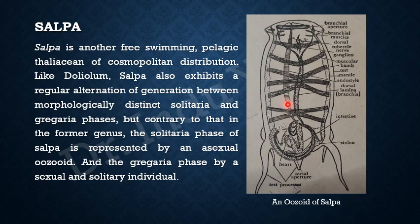You can see the endostyle continuing into a stolon, which gives rise to new individuals. On the posterior side this is the atrial aperture, and there are four extensions of the test on the posterior side. The test extends to form four tentacle-like structures which are known as test processes — one, two, three, and four. So this was the general structure of the animal.